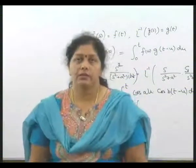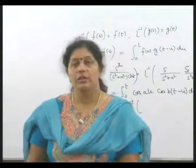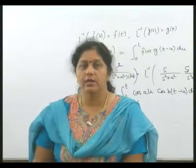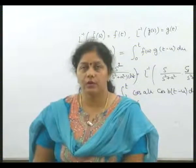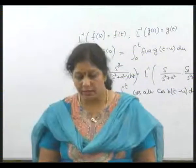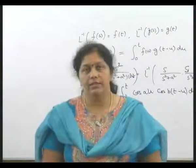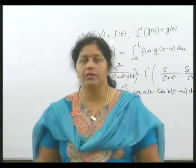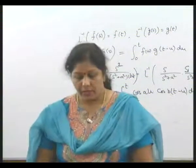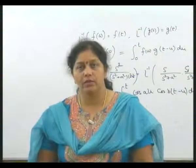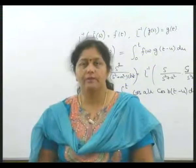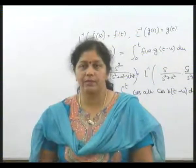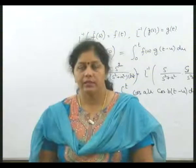L inverse of 1 upon s squared plus a squared equals 1 upon a times sin(at), and L inverse of s upon s squared plus a squared gives cos(at). L inverse of 1 upon s squared minus a squared equals 1 by a times sinh(at). L inverse of 1 upon (s minus a) squared plus b squared is 1 by b of e^(at) sin(bt), and L inverse of (s minus a) divided by (s minus a) squared plus b squared gives e^(at) cos(bt).